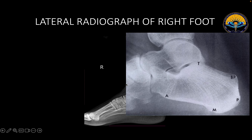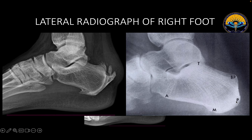Coming to a little more explanation of the tubercles which we can evaluate on the lateral calcaneal radiograph: the superiormost lies the talus tubercle, which helps in the talo-calcaneal joint articulation. Then there is a bursal prominence or bursal tubercle, which was quite prominent in our case. There is a posterior tubercle as seen here, and over the inferior aspect of the calcaneum we have the medial tubercle and the anterior tubercle.